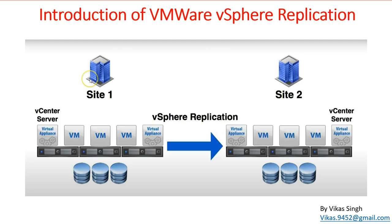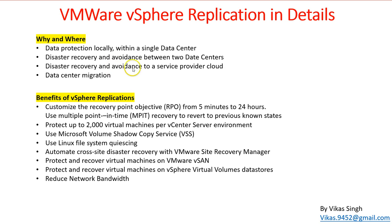The second use case is disaster recovery between two data centers in different cities or countries. If site one experiences a disaster such as a storm, you can bring all infrastructure live on site two in a different city. The third use case is disaster recovery to a service provider cloud — if you have everything hosted on a service provider and there's a failure, you can bring your services up on a secondary service provider cloud.